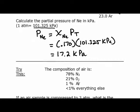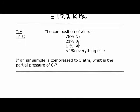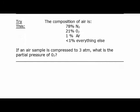It's time for you to try one. This problem is about the composition of air. Air contains nitrogen, oxygen, argon, and a little bit of some other stuff. We're taking a sample of air and compressing it to three atmospheres. We want to know the partial pressure of oxygen. This is like filling a gas cylinder to climb Mount Everest or go scuba diving. Stop the video, calculate, and then turn it back on.